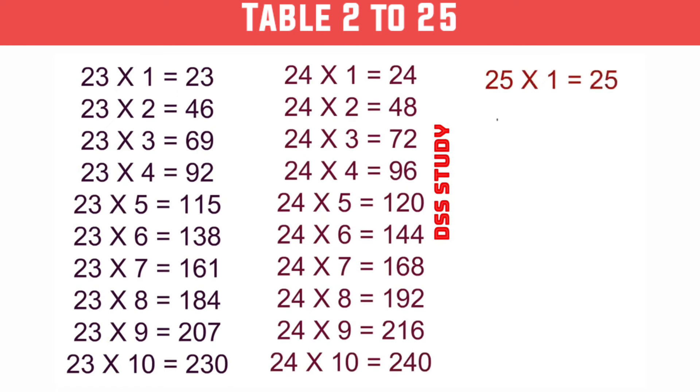25×1 is 25, 25×2 is 50, 25×3 is 75, 25×4 is 100, 25×5 is 125.